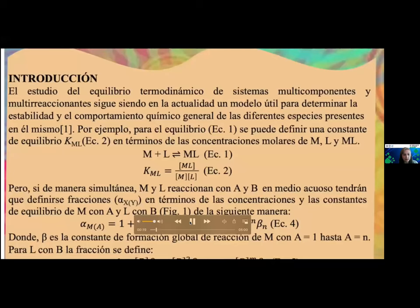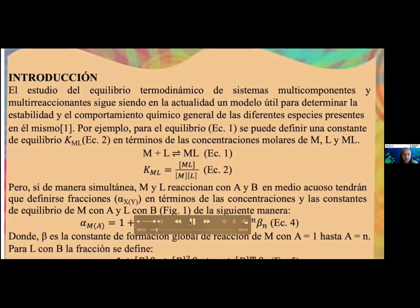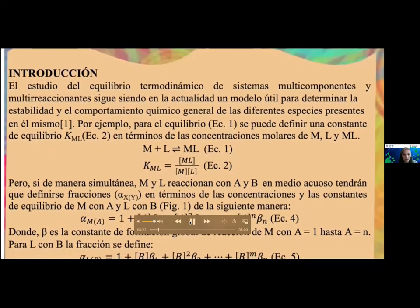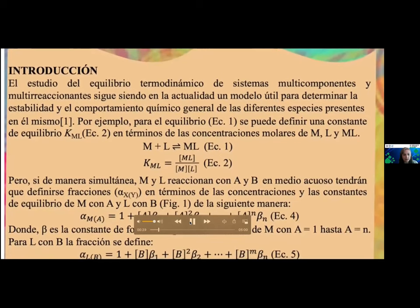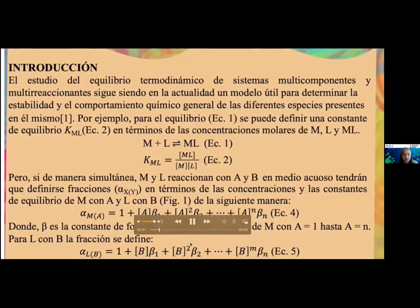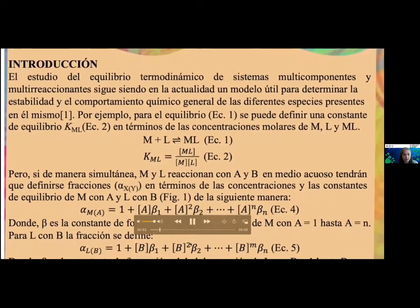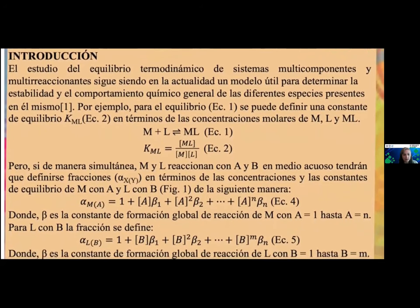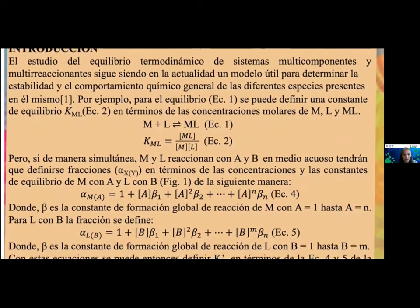El estudio del equilibrio termodinámico de sistemas multicomponentes y multireaccionantes sigue siendo en la actualidad un modelo útil para determinar la estabilidad y el comportamiento químico general de las diferentes especies presentes en el mismo. Por ejemplo, para el equilibrio que se representa en la ecuación 1, se puede definir una constante de equilibrio que se muestra en la ecuación 2 en términos de las concentraciones molares de M, L y ML.